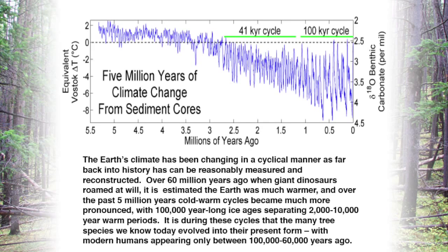The earth's climate has always been in a state of climate change. This graph is generated from data taken from ocean sediments and carbonate deposits and with great confidence shows the climatic fluctuations of the last five and a half million years. As you can see, our current climate is on the right side.